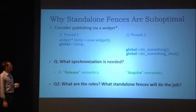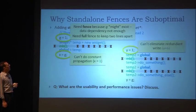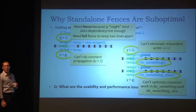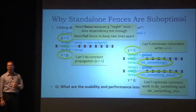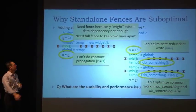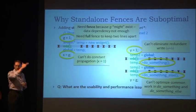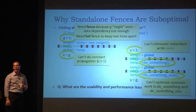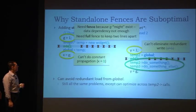The point of this section is just so you understand why fences cost more: because they inject more synchronization, and because they disable more optimizations.